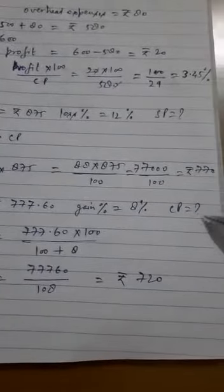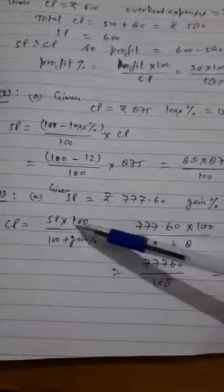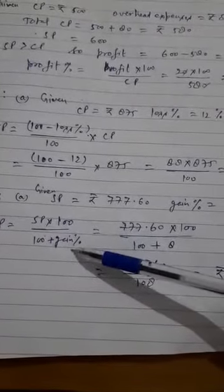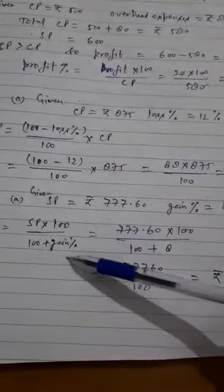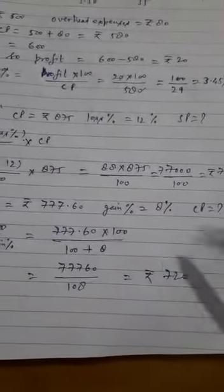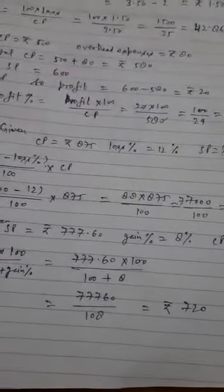Question number 3: SP and gain percent is given, and find out CP. CP ka woh formula lagayenge jis mein gain percent given: SP into 100 upon 100 plus gain percent. After putting the value you will get 720 rupees.